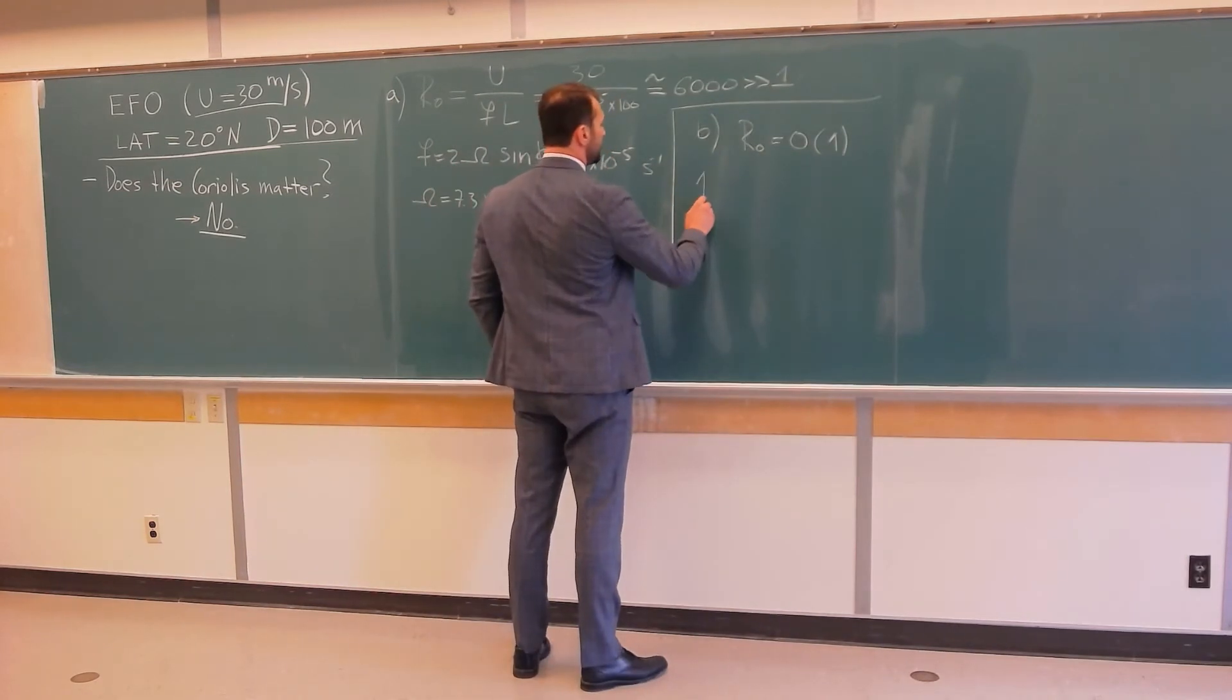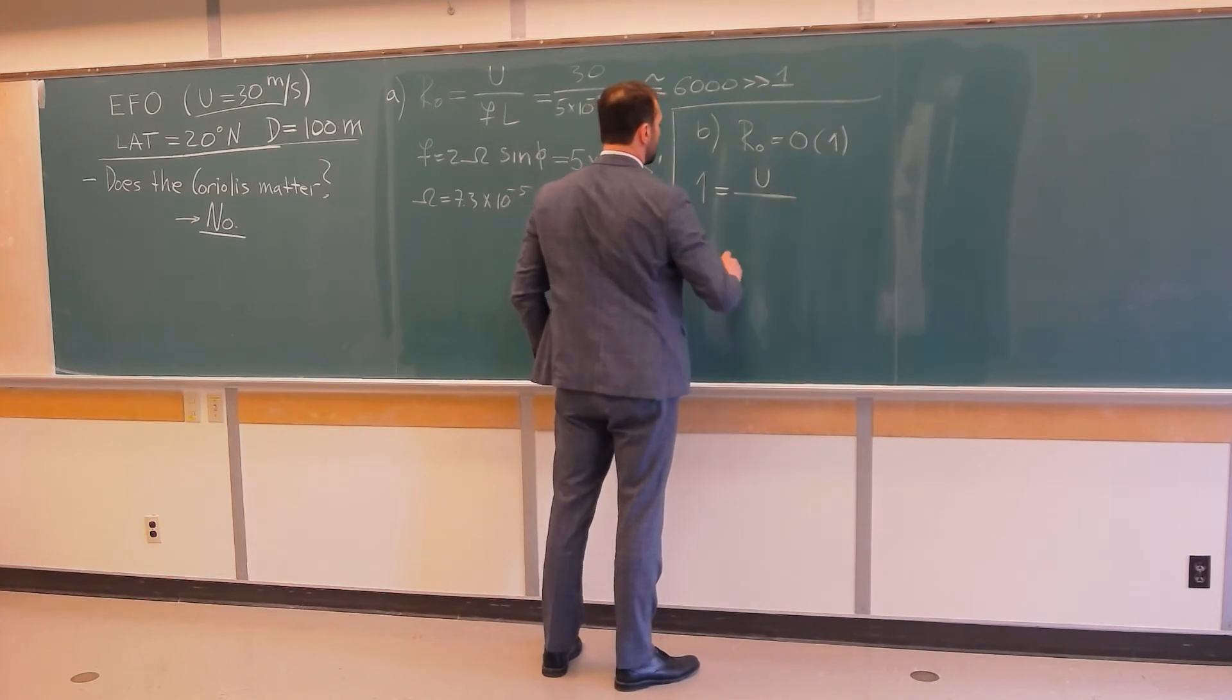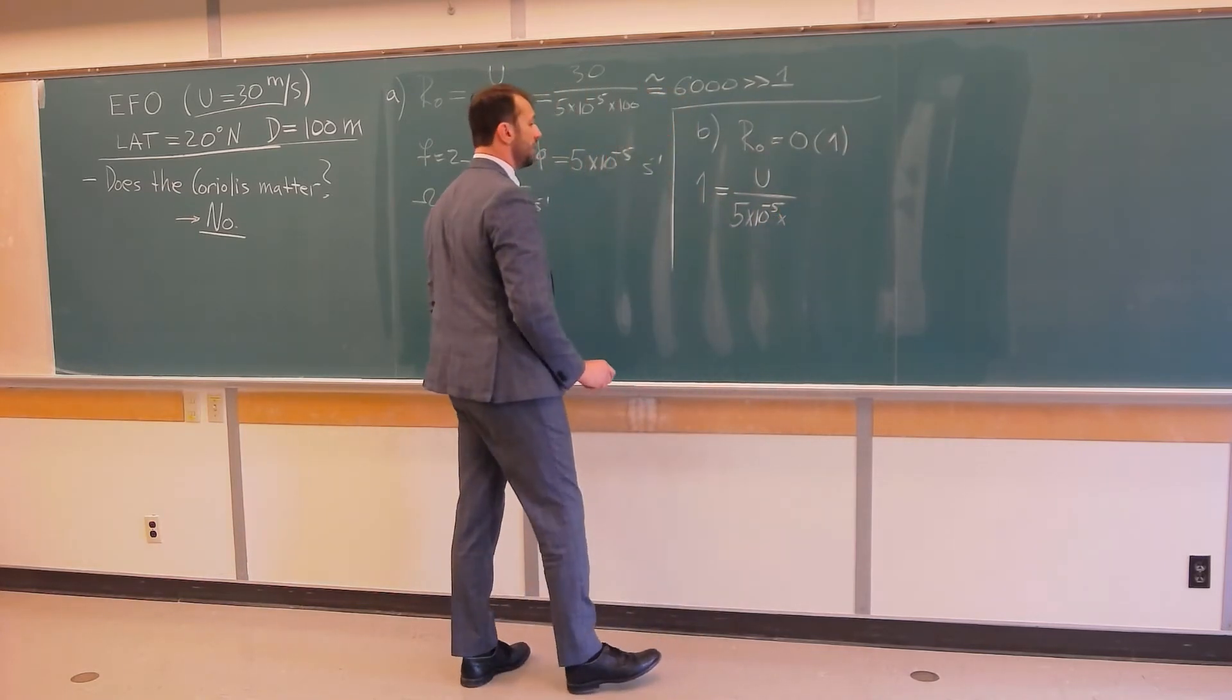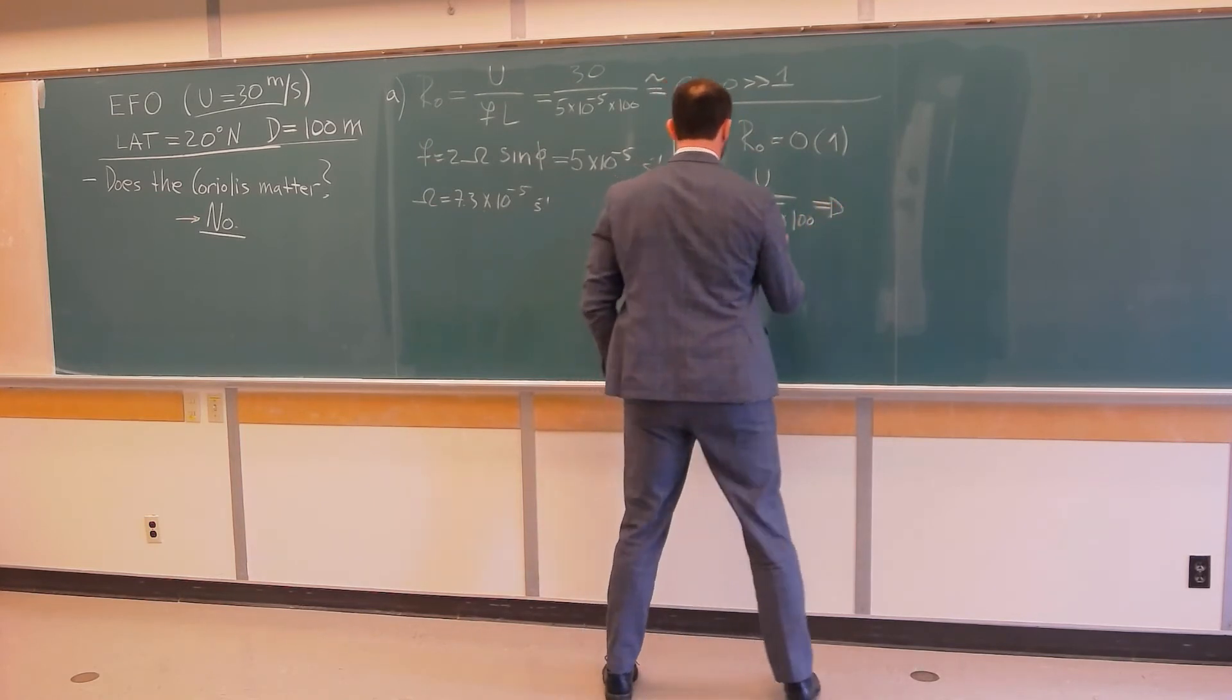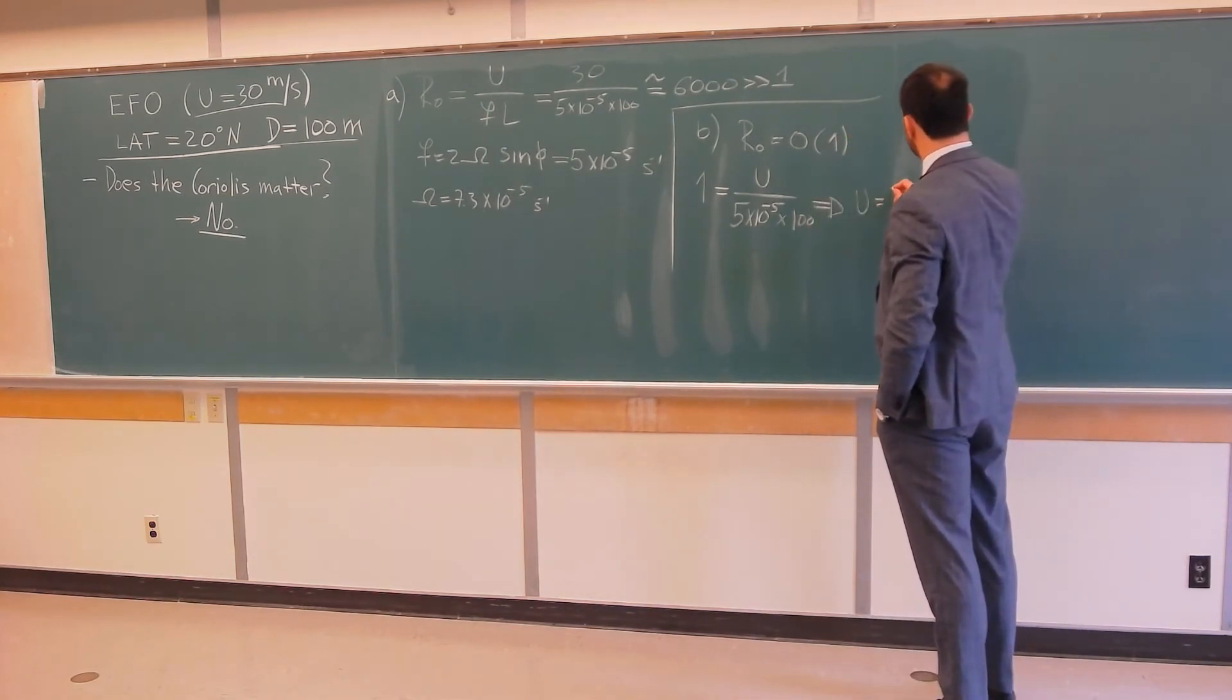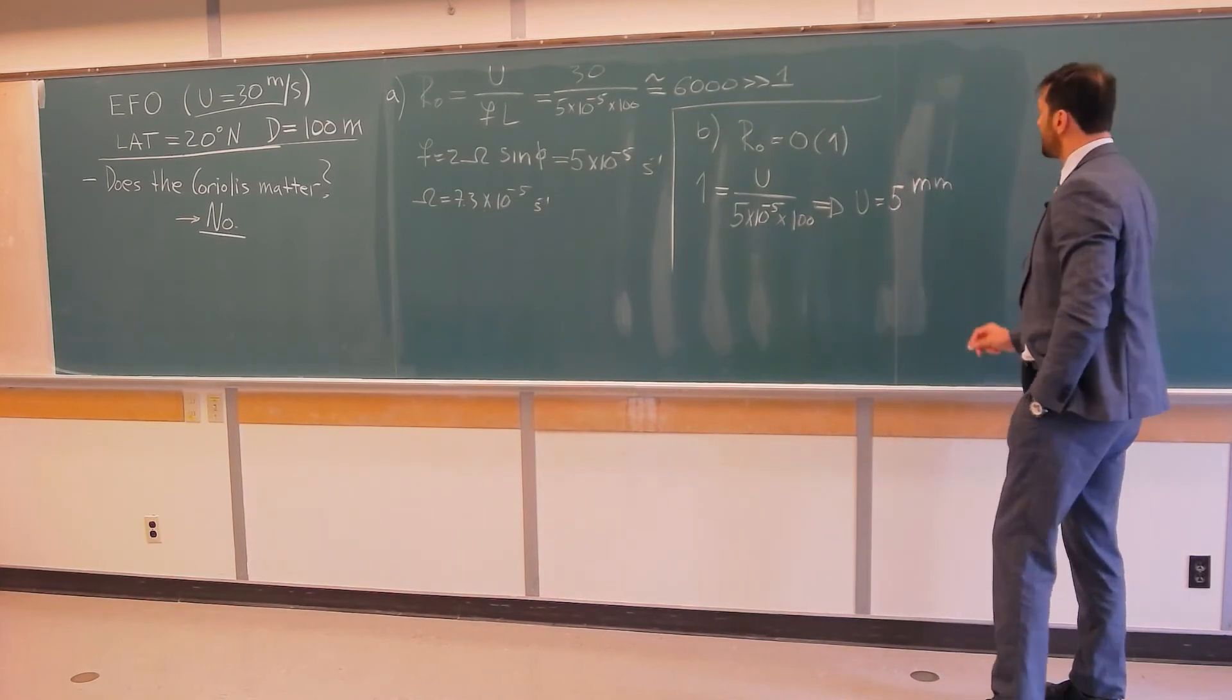So, namely, if we say that 1, and that's Rossby number, is equal unknown U divided by known F and L, and F is approximately 5 times 10 to the power negative 5, and L is 100, from here it follows, if you calculate this, that U needs to be around 5 millimeters per second.